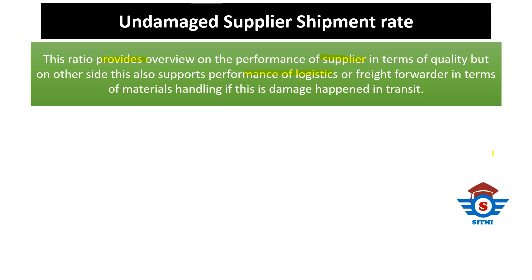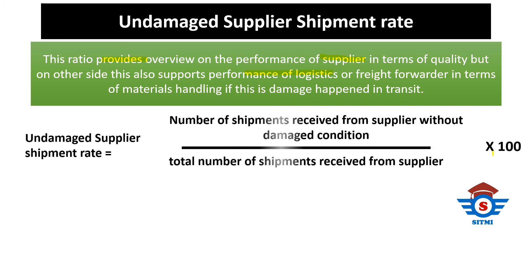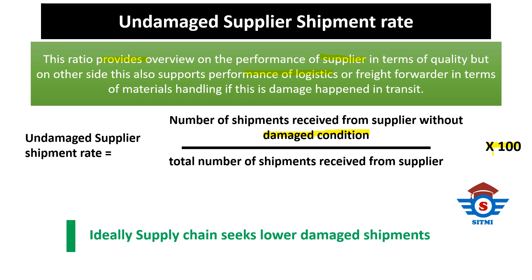Undamaged Supplier Shipment Rate equals the number of shipments received from supplier without damage divided by total number of shipments received from supplier, expressed as a percentage. This ratio provides an overview of supplier performance in terms of quality. In an ideal situation, supply chain seeks to have lower damaged shipments, reflecting better quality from both the supplier and the trade forwarders.